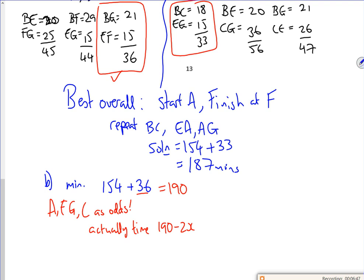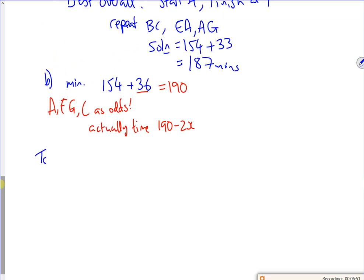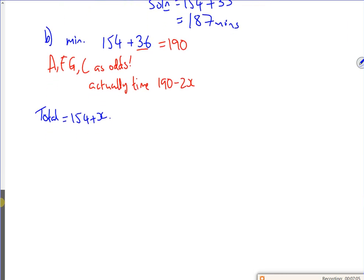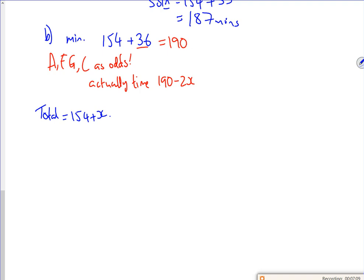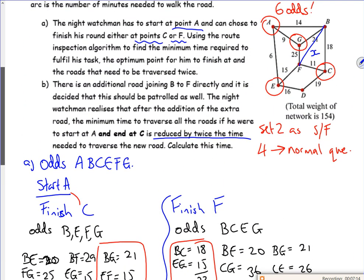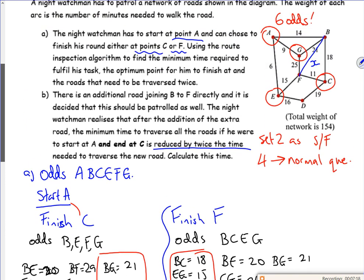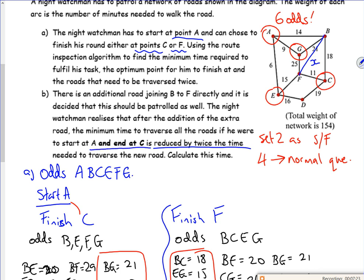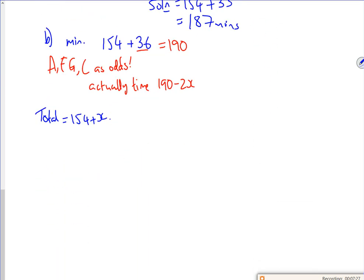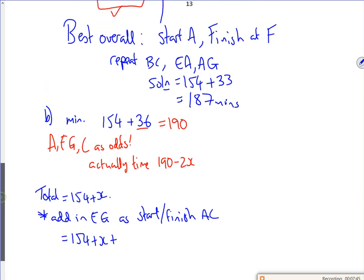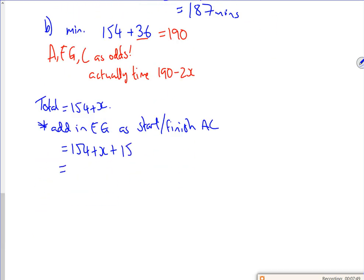So the total time is 154 plus X. We're going to need to add in EG as the start and finish. That's the only odd pairing left now. So that would be 154 plus X plus 15, which is 169 plus X. Now these are the same as each other - the 169 plus X is the same as 190 minus 2X.